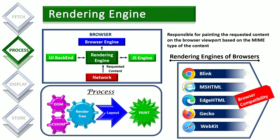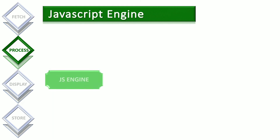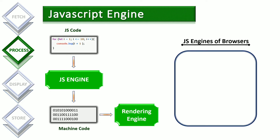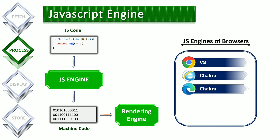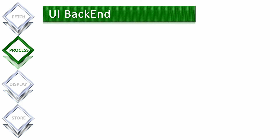This is why we have browser compatibility issues between browsers. The next component involved in processing the data is the JavaScript engine, which is used to convert JavaScript code into machine code. The output of the JavaScript engine will be sent to the rendering engine for further processing. The JavaScript engine is responsible for interpreting and executing JavaScript code embedded in the HTML document. Each browser has its own JavaScript engine: Google Chrome uses V8, Internet Explorer and Microsoft Edge use Chakra, Mozilla Firefox uses SpiderMonkey, and Safari uses WebKit.